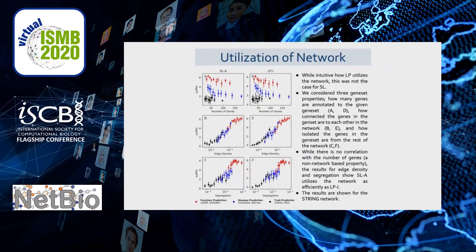One last thing we examined is how well supervised learning utilizes the network. In label propagation this is straightforward since it takes information directly from neighbors, but in SL it's less clear. We found no correlation with a non-network property like the number of genes. However, looking at network properties such as edge density and segregation — the isolation of a gene set from the rest of the network — we can see that SLA captures network properties just as well as LPI.